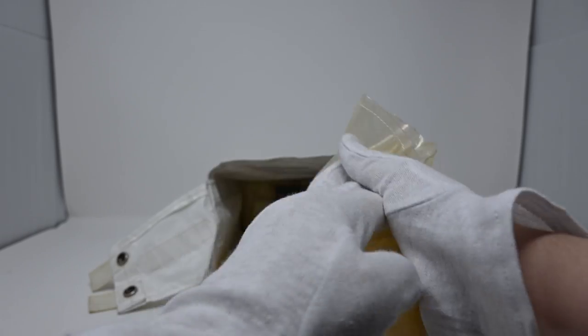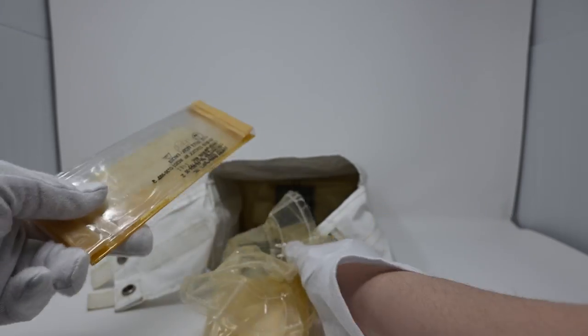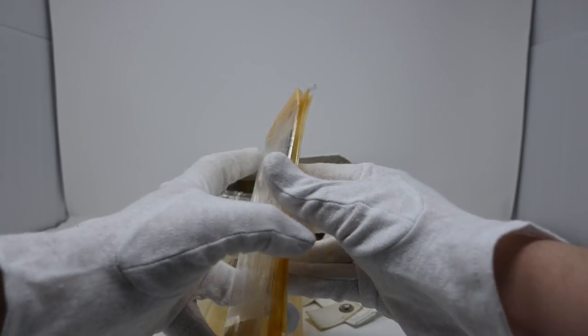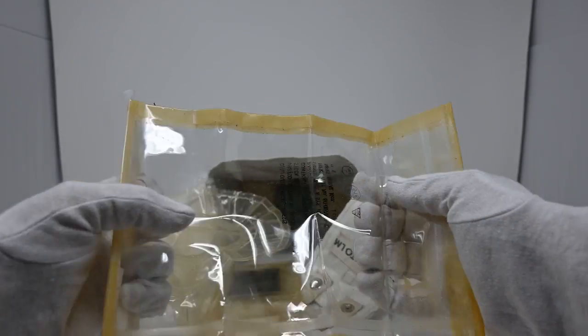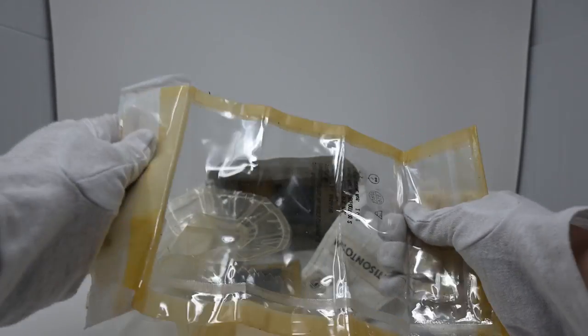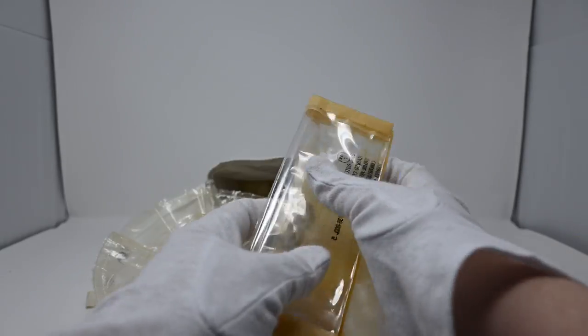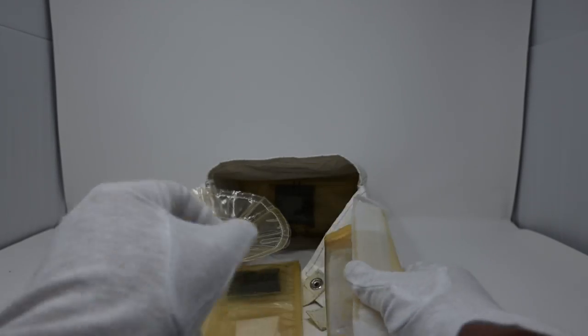So this would all be sealed up nicely and then put into a slightly more heavy-duty bag. This plastic is a lot tougher. So that bag would go inside this bag. This bag would be sealed, rolled up, and then put inside the waste stowage compartment.